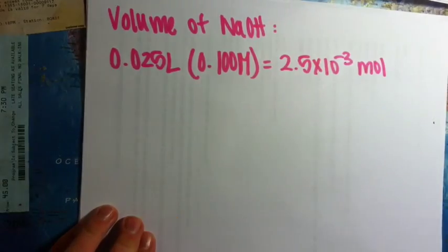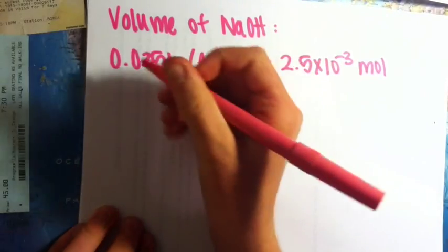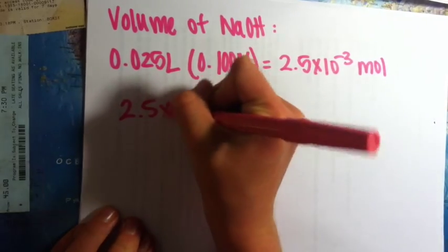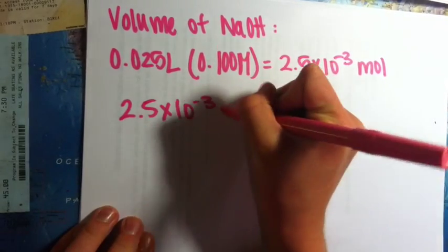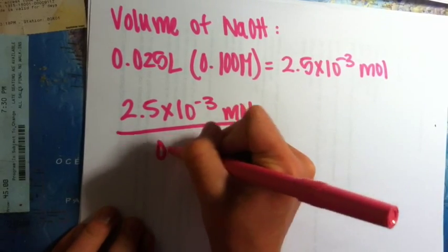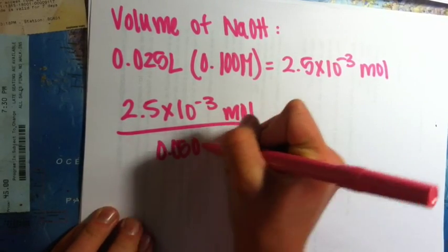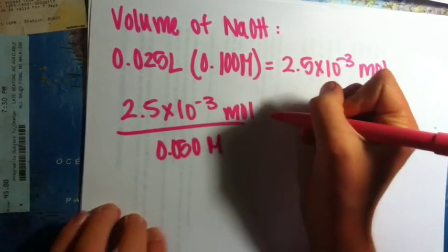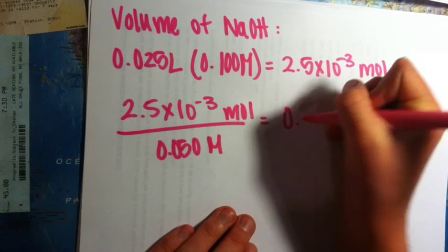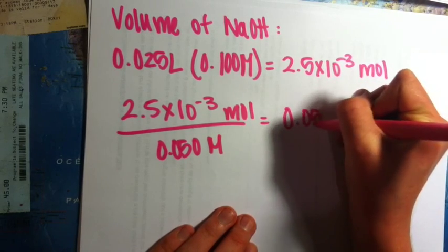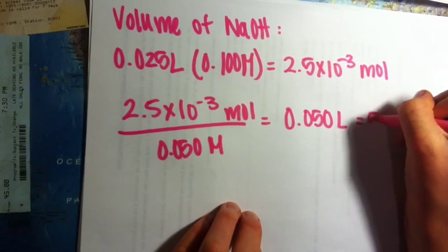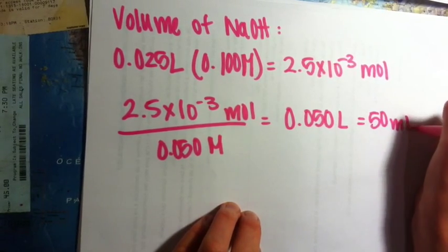To find the volume of sodium hydroxide needed, we must divide that number by 0.050 molar, which is the concentration of sodium hydroxide. This will give us the volume, which is 50 milliliters.